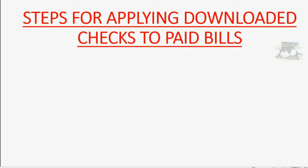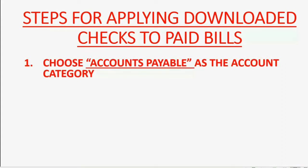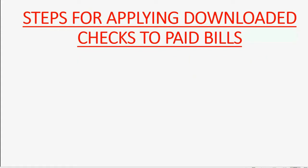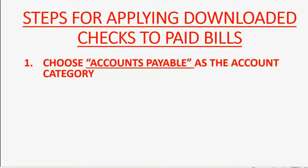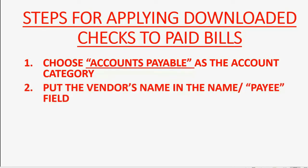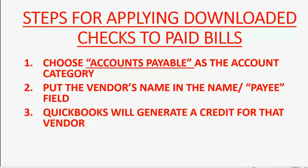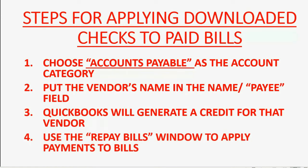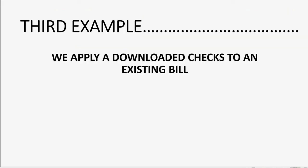Just as QuickBooks can handle prepayments from customers, it can handle advanced payments to vendors for future bills. The steps are exactly the same but with vendor-related terms. When you record the check or expense from the bank feed center, choose Accounts Payable as the account category, put the vendor's name in the payee field, and QuickBooks generates a credit. Then use the Pay Bills window to apply the payments.